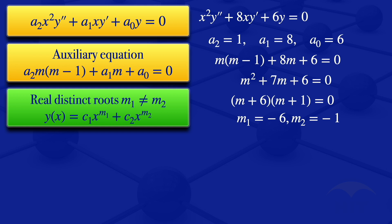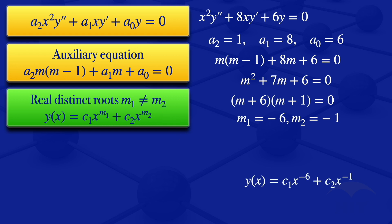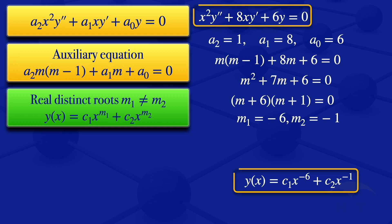Substituting m1 equals minus 6 and m2 equals minus 1 into the general solution formula, we get y equals c1 times x to the power minus 6 plus c2 times x to the power minus 1. That is the general solution to the first equation.